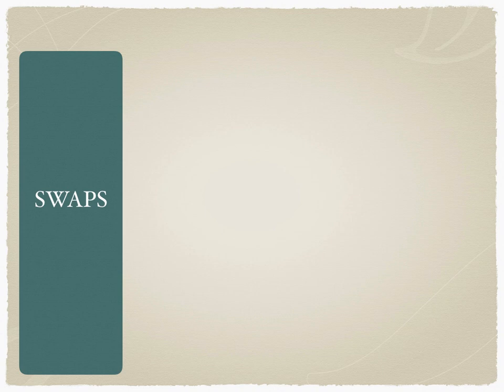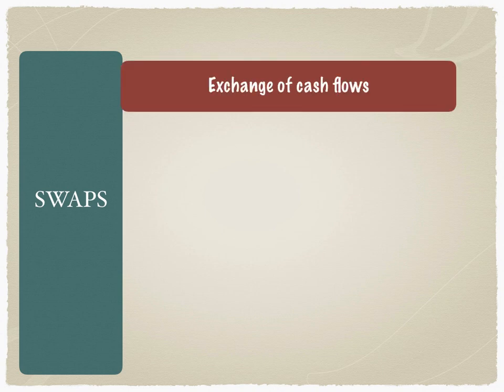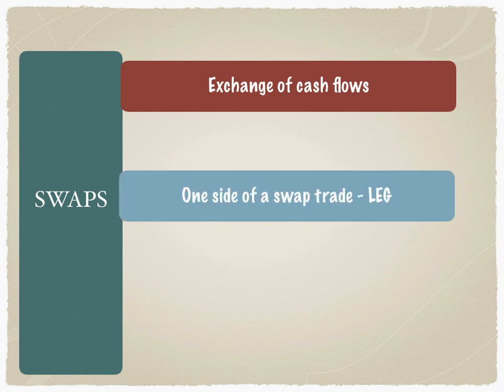That completes two features of swaps. The third feature is that it's an exchange of cash flows. Each side of a swap trade, in technical financial language, is called a leg of the swap. This leg could be the fixed leg or the floating leg in the case of an interest rate swap, or a dollar-euro leg in the case of a currency swap.